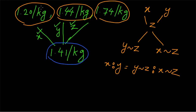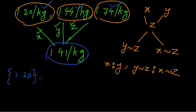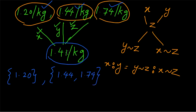The given mean is Rs 1.41 per kg. We have to group these 3 varieties into 2 groups: one group consisting of elements greater than the mean, and the second group consisting of elements less than the mean. Here only 1.20 is less than 1.41, so it forms one group. The second group consists of 1.44 and 1.74, which are both greater than 1.41.